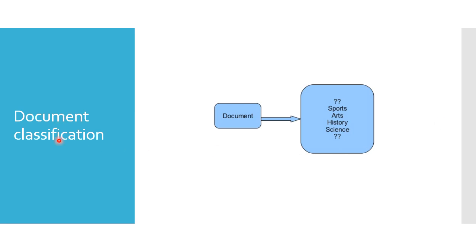Document classification involves classifying a document into a particular category. To do this, we have to understand the contents of the document and then classify it into categories such as sports, arts, history, science, and so on.